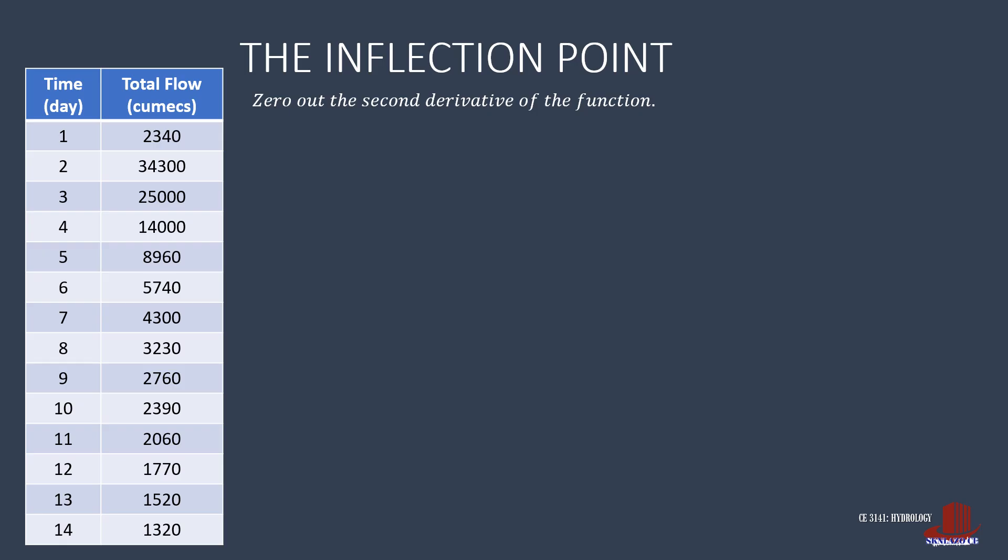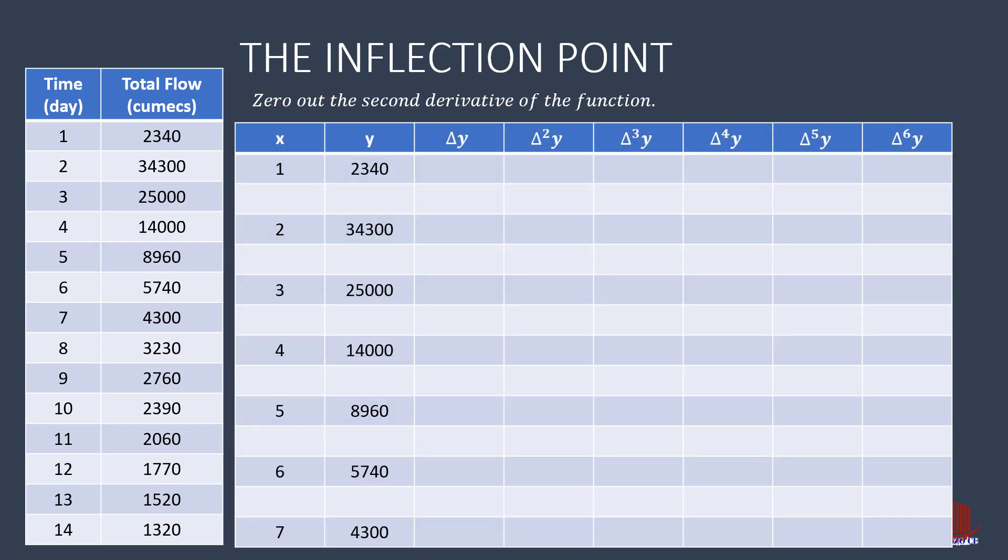Use Gregory Newton forward interpolation in the determination of the function. The first thing to do with this method is to complete the difference table, so we can identify the individual differences. The differences are done in table form until convergence.